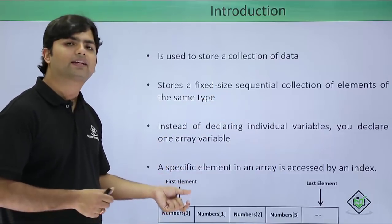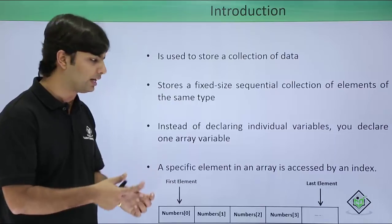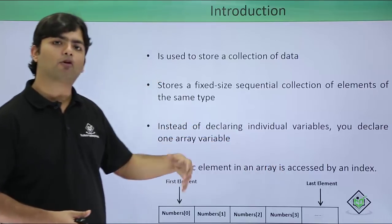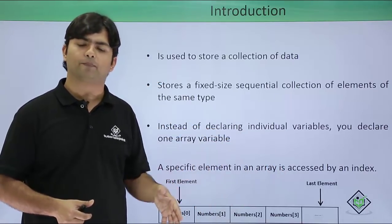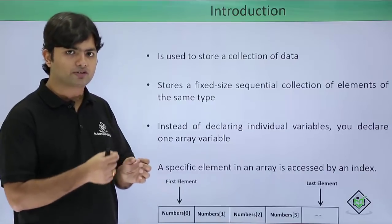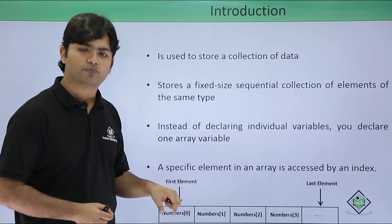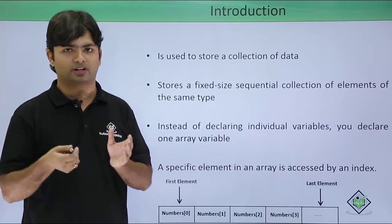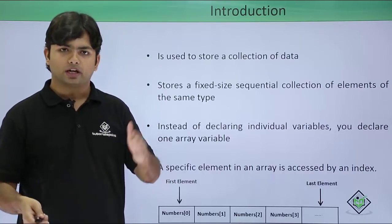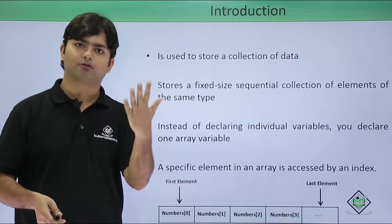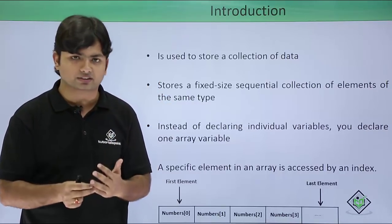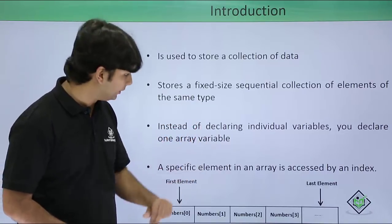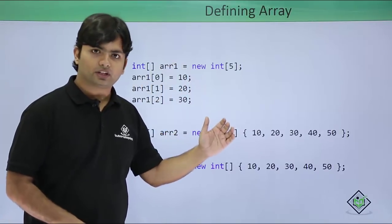You can access each individual item in the collection by passing an index. For example, 'numbers' is the name of my array — the complete array has a common name, but to retrieve a specific element you use the index. The index always starts with zero and goes to the length minus one. For example, if the length of an array is five, the indices will be 0, 1, 2, 3, 4 — the fourth is the last index. You can pass a particular index to retrieve or assign a value.